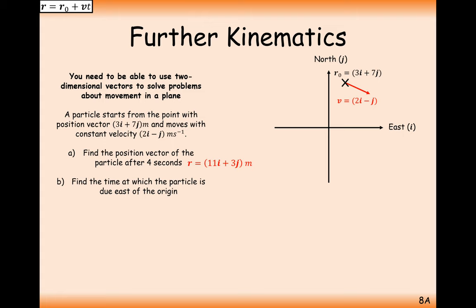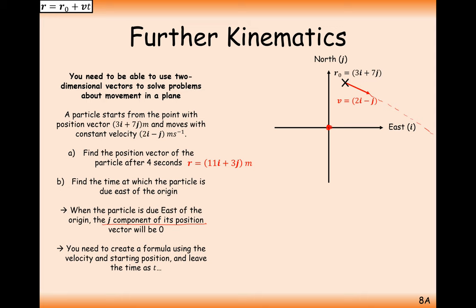For part b, we find the time at which the particle is due east of the origin — the origin is always (0, 0). The particle is moving downwards and at some point will intersect the x-axis. Whenever you intersect the x-axis, it's the y-coordinate — the j component — that you set equal to zero. We don't want the i component equal to zero, because that would mean it hasn't moved left or right.